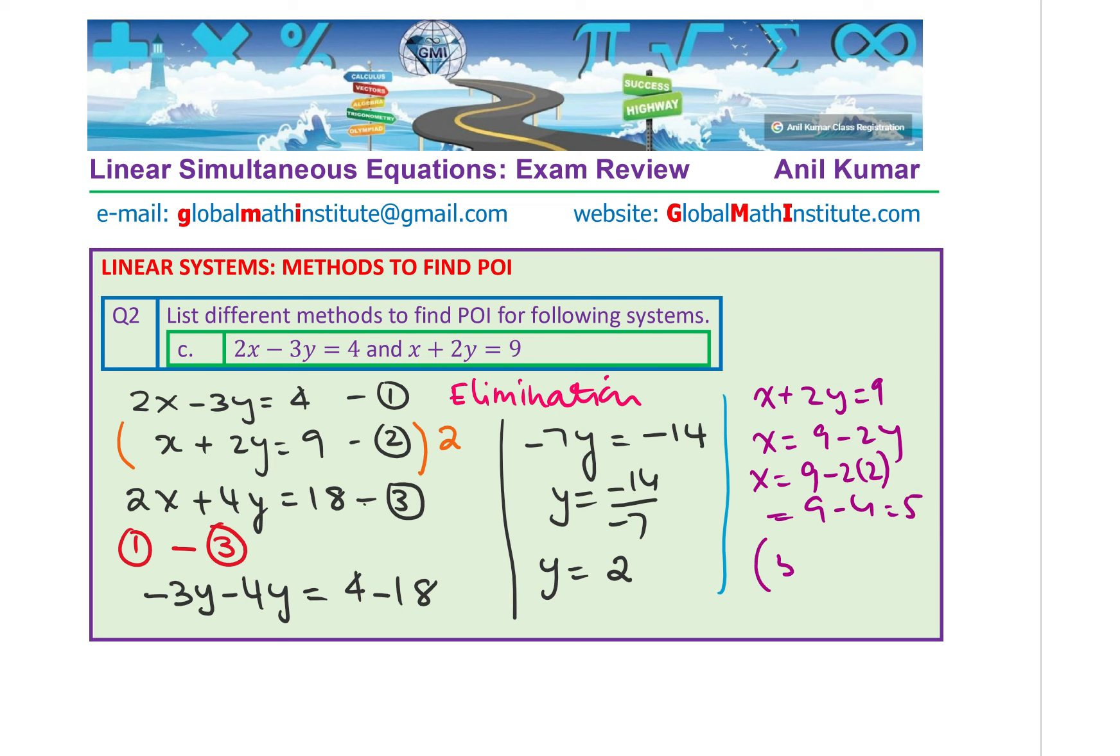So, x is basically 9 minus 2y. Substituting y as 2, we get 9 minus 4 which is 5 and therefore, the solution is 5, 2. Make sense? See how easy we could solve this equation using elimination method. Now, elimination method is very good when it is difficult to isolate y without fractions. You get the idea. Fractions involve lot of calculations. So, this is a simpler method. So, you are there with me. Perfect.